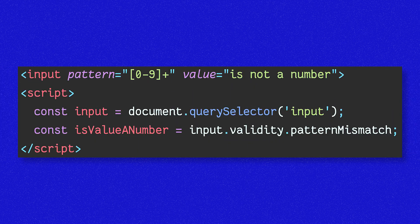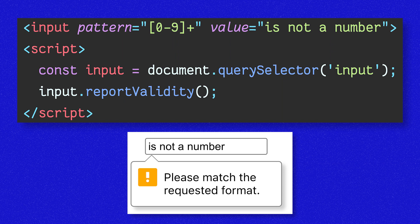Another good use case for properties is to fetch complex properties. For example, say we give an input element a pattern that matches only numbers. Then we can get a reference to that input and request the validity property, which returns a JavaScript object that can be used to check if the input is valid. Another great property use case is the ability to call methods on an element — like calling the input's reportValidity method, which will natively check if the input is valid and pop up an error if it's not. Properties are a powerful way to interact with your elements in a more complex manner than attributes.